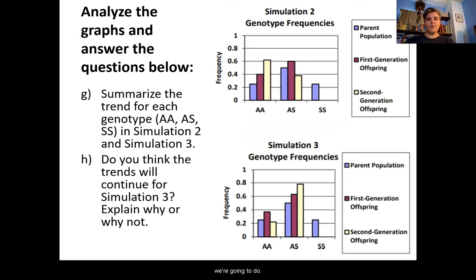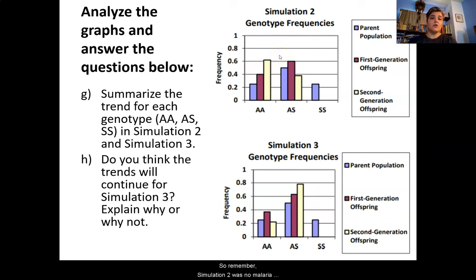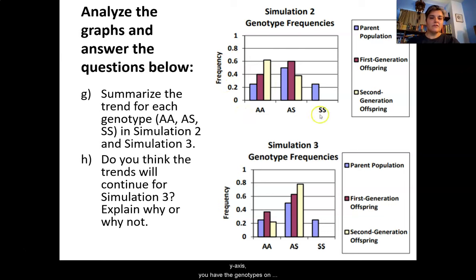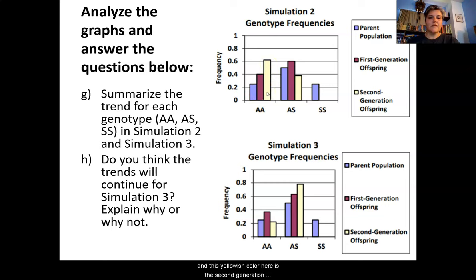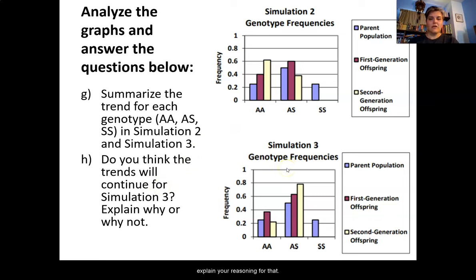Finally, we have a graph analysis. Summarize the trend for each genotype in simulation 2 and simulation 3 — a cross comparison of no-malaria versus high-malaria environments. The graphs show frequency on the y-axis and genotypes on the x-axis. Blue represents the parent population, maroon is the first generation, and yellow is the second generation offspring. The next question asks whether you think the trends will continue for simulation 3, and explain your reasoning. Pause the video to answer those two questions.